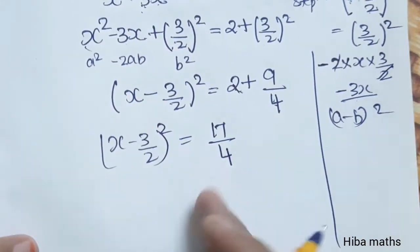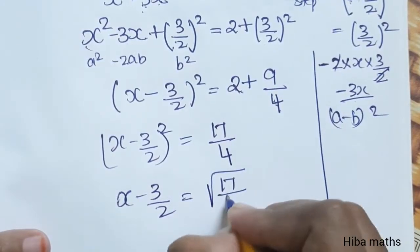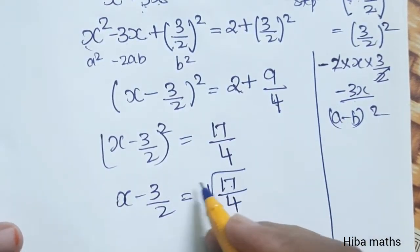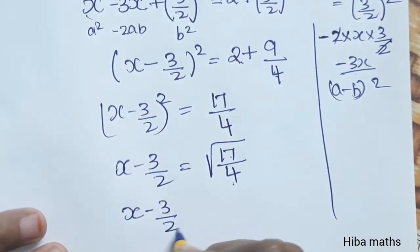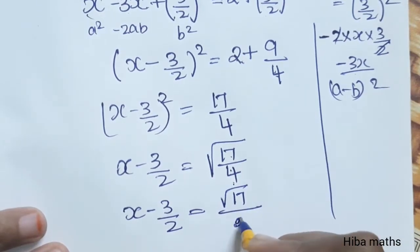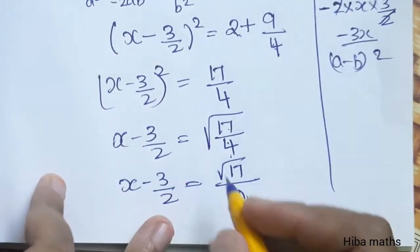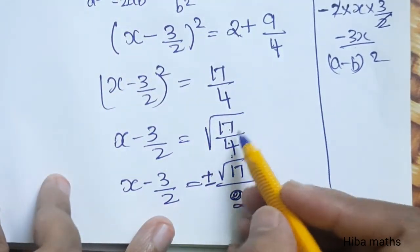Now square is on one side, so we take the square root. Square root of (x - 3/2)² equals square root of 17/4. In this step,